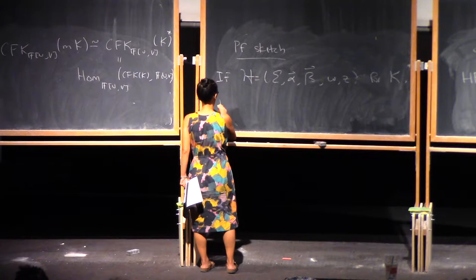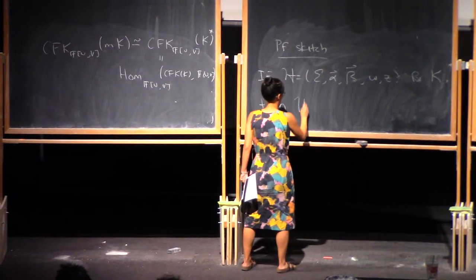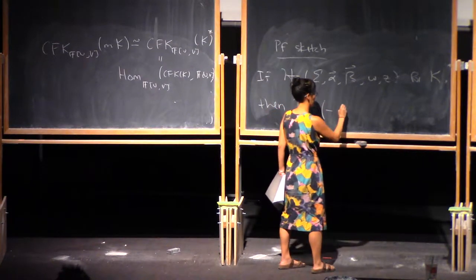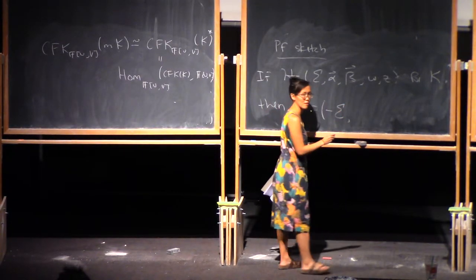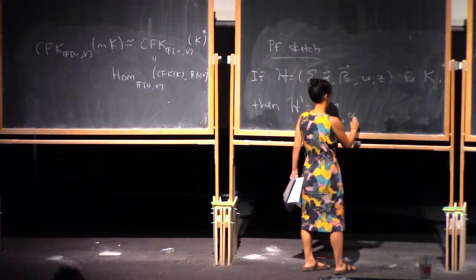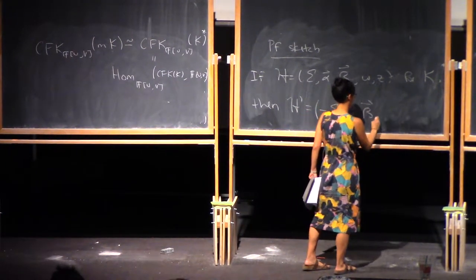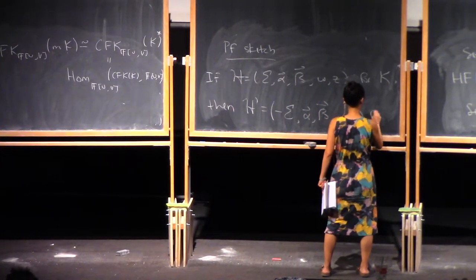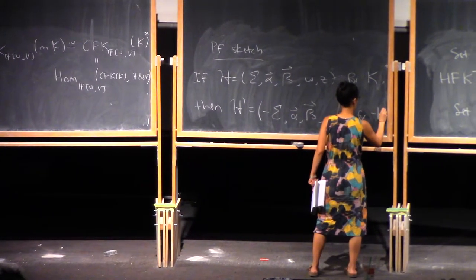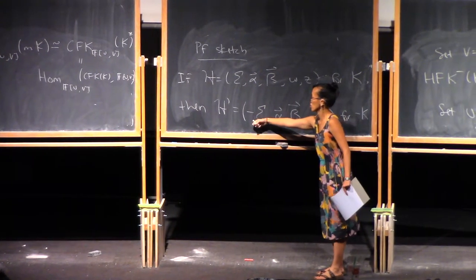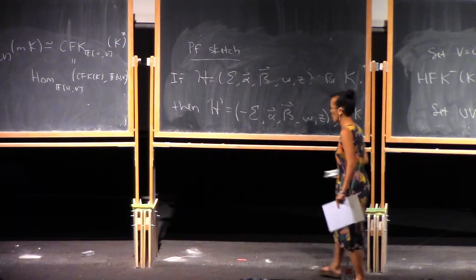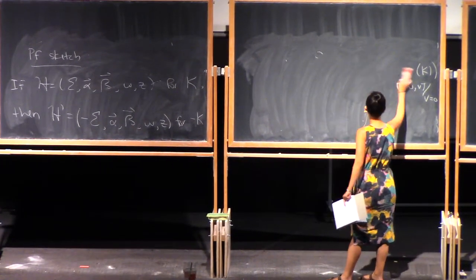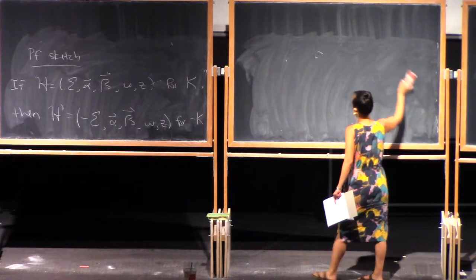If H is the Heegaard diagram for K, then if we just reverse the orientation of the surface — that was one of your exercises from Monday, which is to show that this reverses the orientation of the 3-manifold — this gives a Heegaard diagram for minus K, because reversing orientation here reverses the orientation of S³.